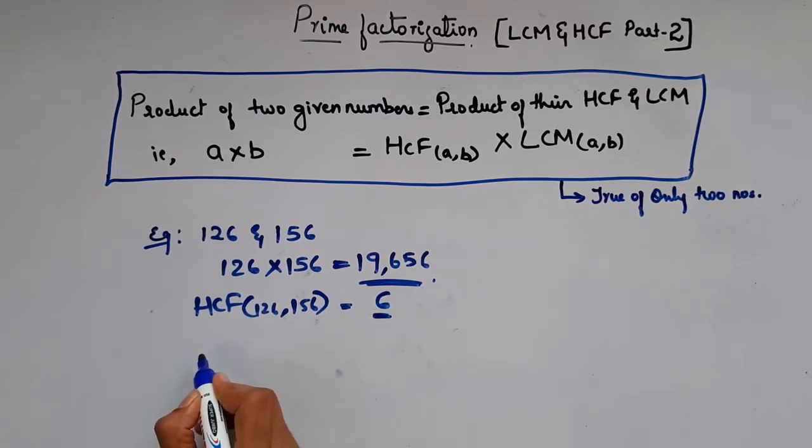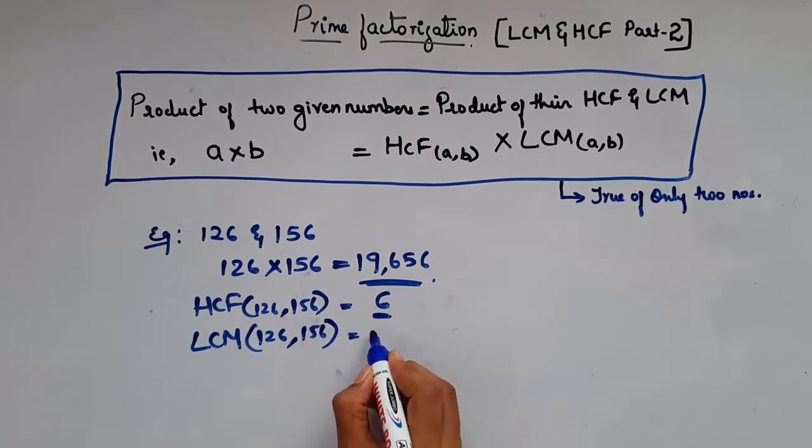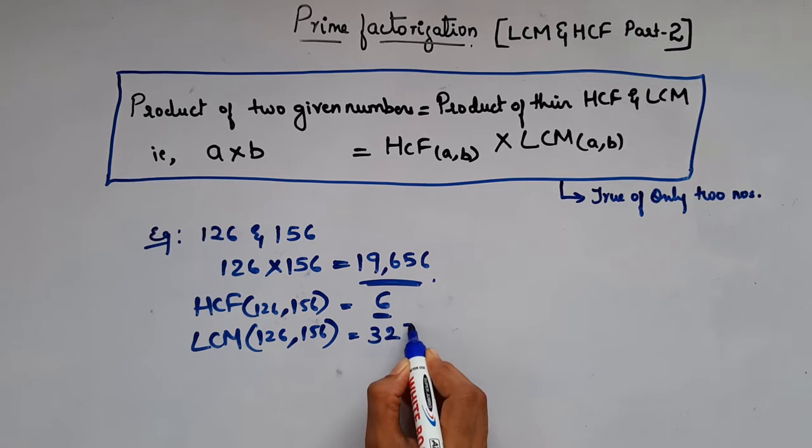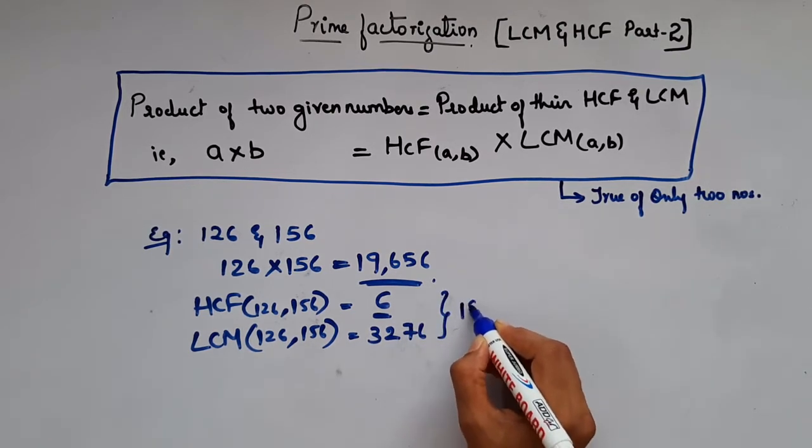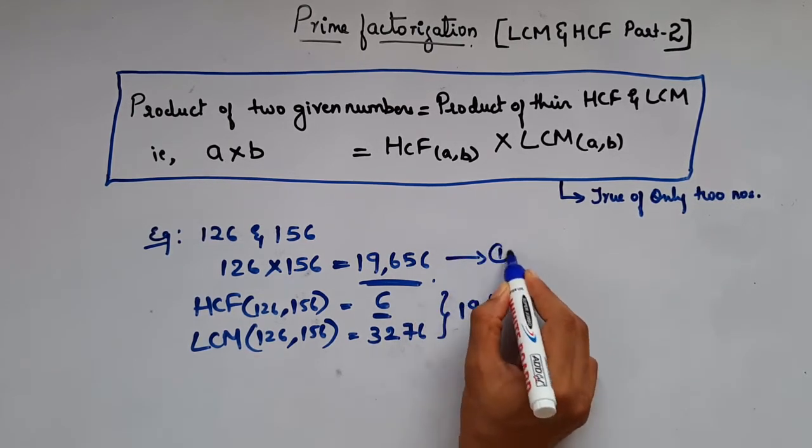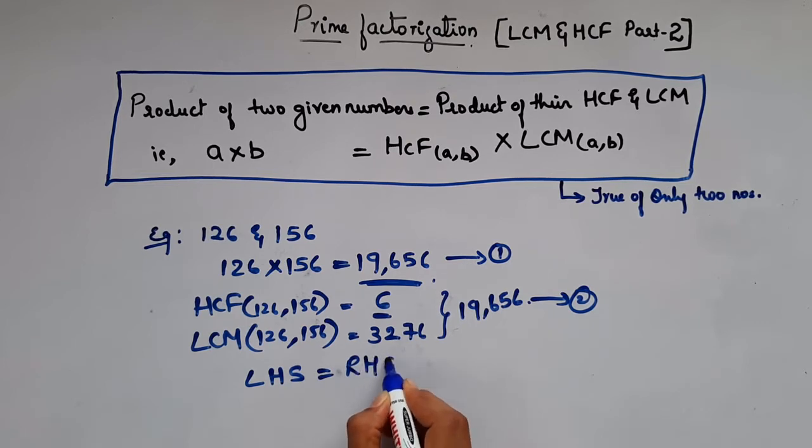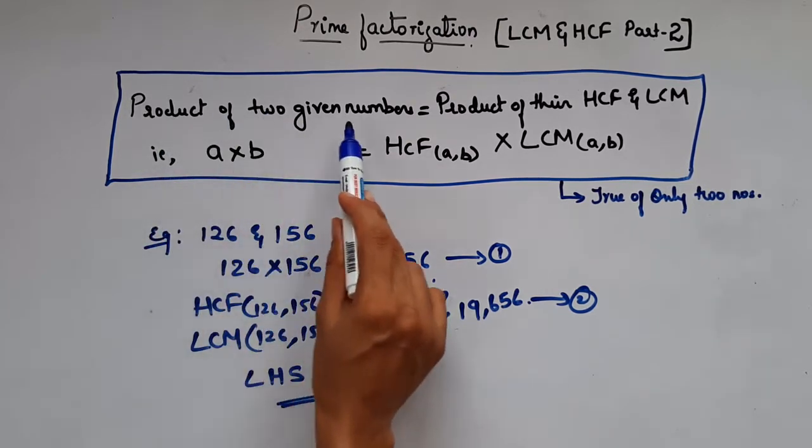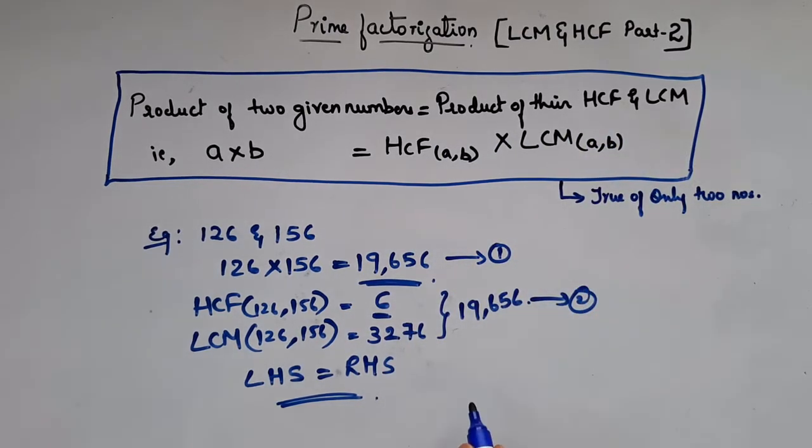LCM of 126 and 156 will give the value 3,276. So the product of these two numbers is equal to 19,656. From one and two, LHS, that is left hand side, is equal to RHS. That is, product of two given numbers is equal to product of their HCF and LCM. Hence the proof.